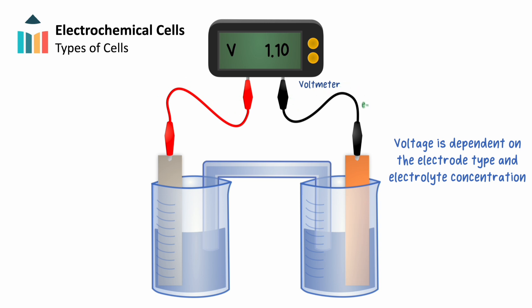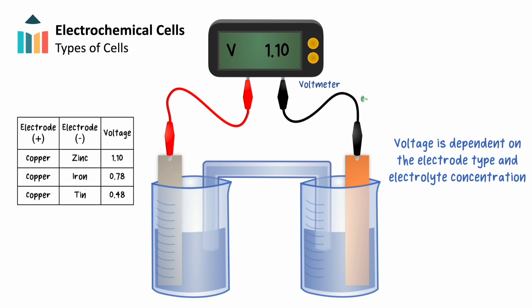The voltage we can measure depends on multiple factors, including electrode type and electrolyte concentration. This table shows how different half-cell combinations generate different voltages. With our general comparison in mind, let's compare our two types of electrochemical cells in more depth, starting with voltaic cells.